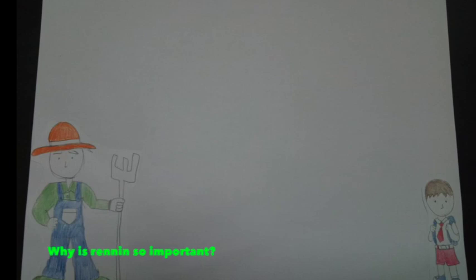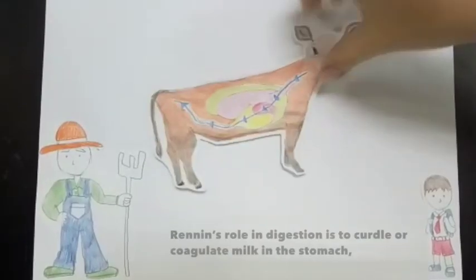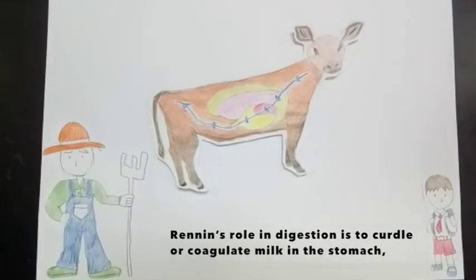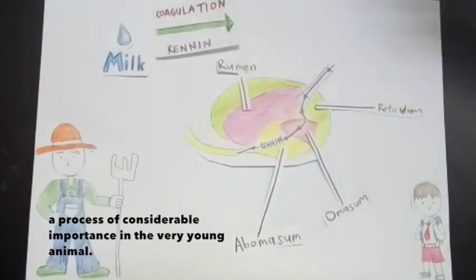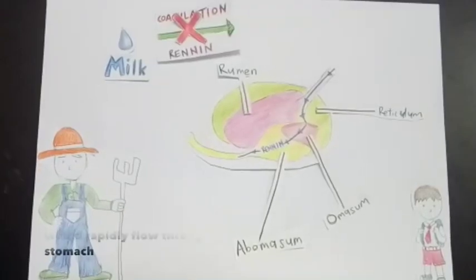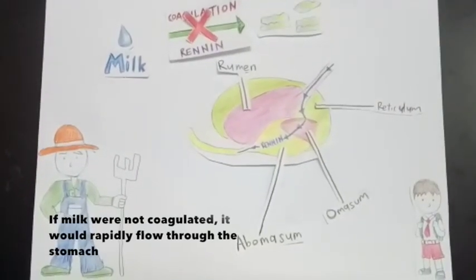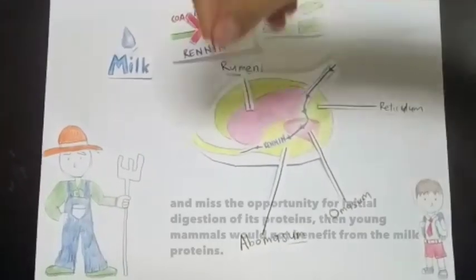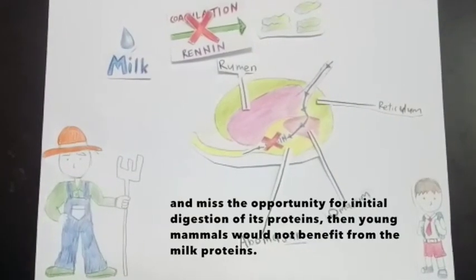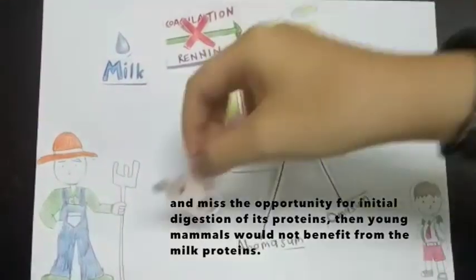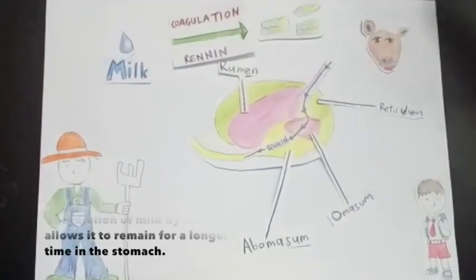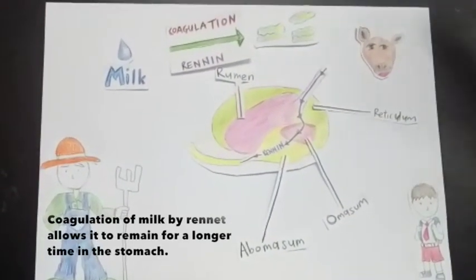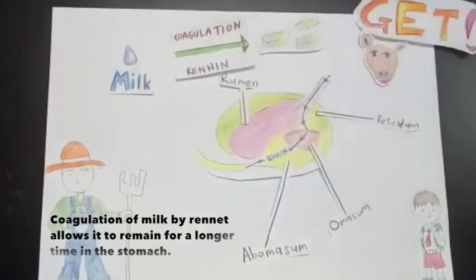Why is renin so important? Renin's role in digestion is to curdle or coagulate milk in the stomach, a process of considerable importance in very young animals. If milk is not coagulated, it would rapidly flow through the stomach and miss the opportunity for initial digestion of its protein. Then, young mammals will not benefit from milk protein. Coagulation of milk by renin allows it to remain for a longer time in the stomach.